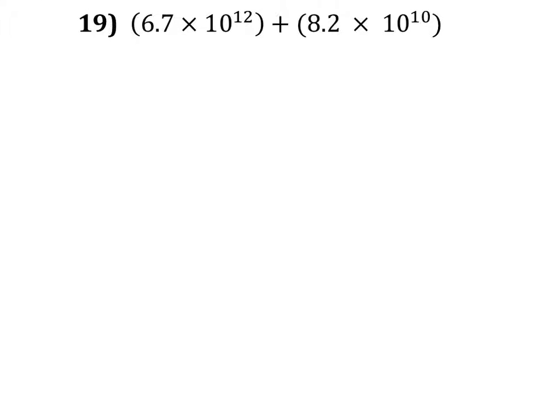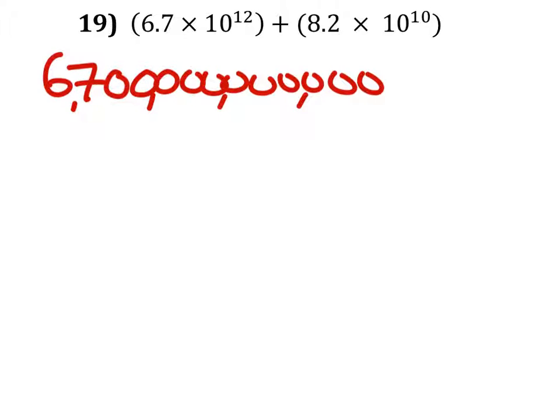Alright, so 6.7 times 10 to the power of 12 would give us 6, 7, and then 11 zeros. Alright, so there's the first number.